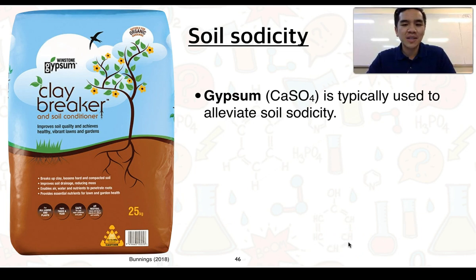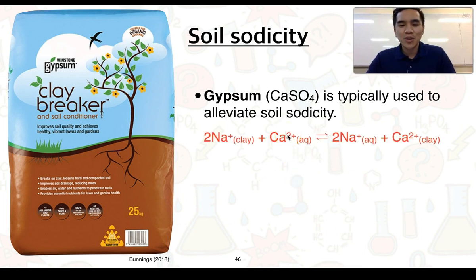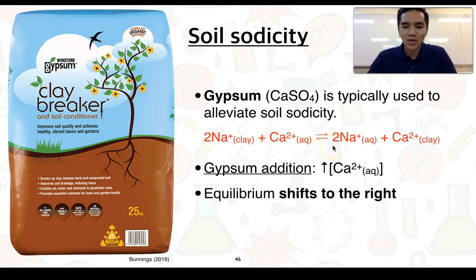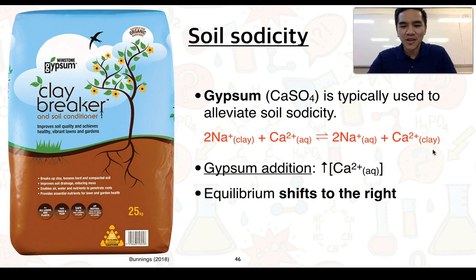To combat soil sodicity, gypsum — primarily consisting of calcium sulfate — is typically used. We can explain how this works using an equilibrium where sodium and calcium ions are in equilibrium between clay and soil water. The addition of gypsum increases the concentration of calcium ions in the soil water. The system shifts to the right to decrease that concentration, so more sodium ions move into the soil water and are washed away, while the more positively charged calcium ions are adsorbed onto the clay. This helps the soil aggregate and reduces issues of swelling and soil dispersion, which is the structural collapse of the soil.